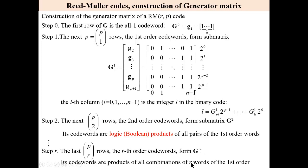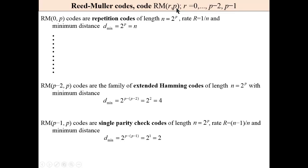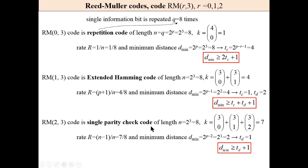If we have a variable P and R equal to 0, then we have a family of repetition codes. For R equal to P minus 2, we have a family of self-dual extended Hamming codes. For R equal to P minus 1, we have a family of single parity check codes.